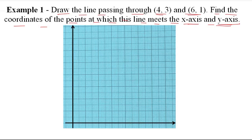First we have to plot the origin O at zero. Then we have to mark the x-axis and y-axis. For the x-axis we need up to 6 coordinates — here 4 and 6 are the key values, so the x-axis maximum is 6.